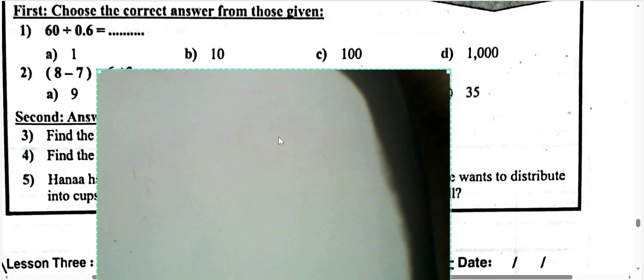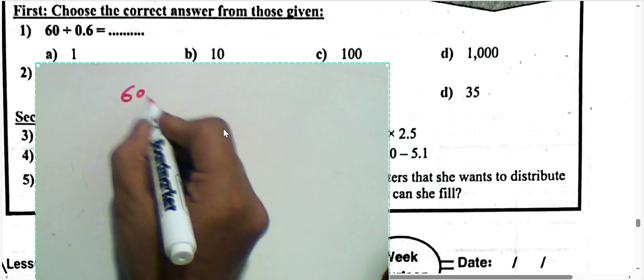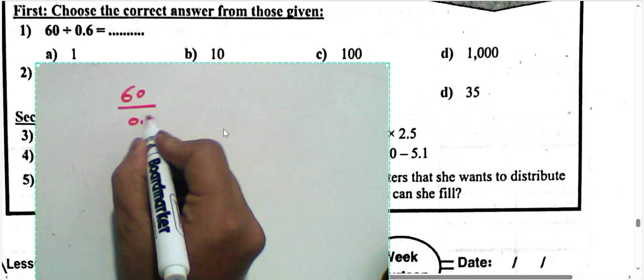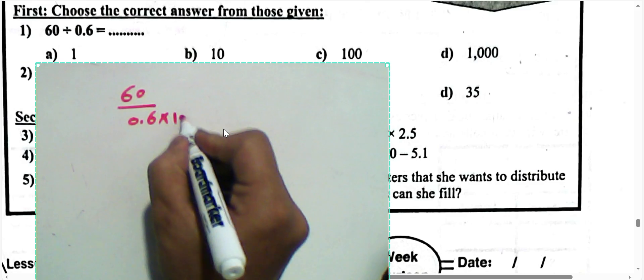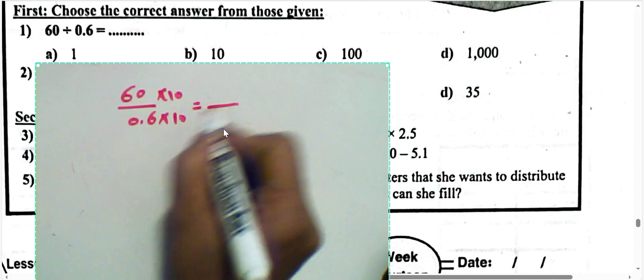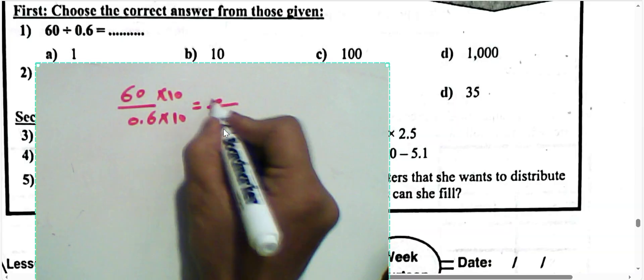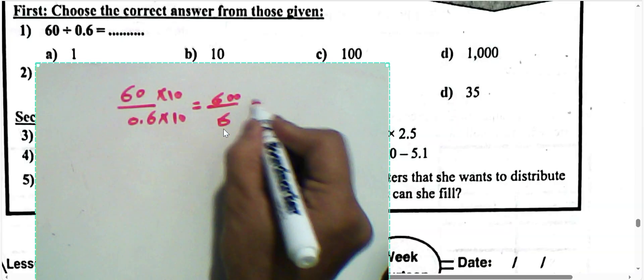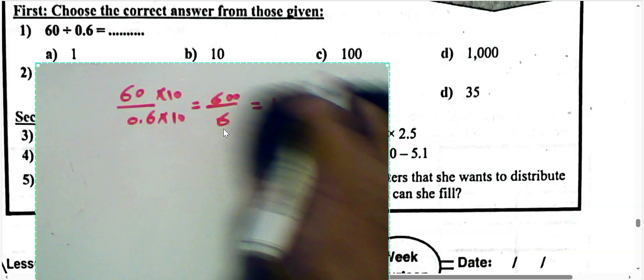Next example: find the result of 60 divided by 0.6 tenths. We have a decimal in the divisor — cancel the decimal point by multiplying by 10, since the decimal is one place. This gives 600 divided by 6. The result is 100.